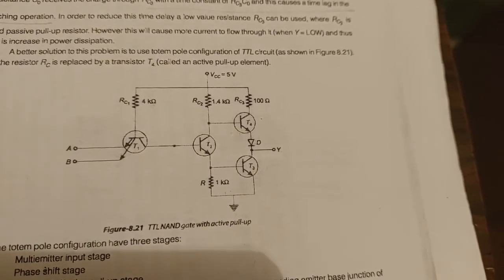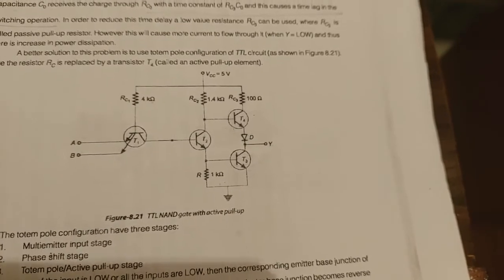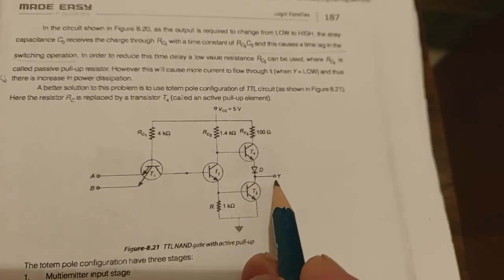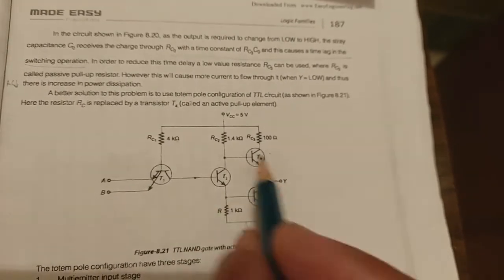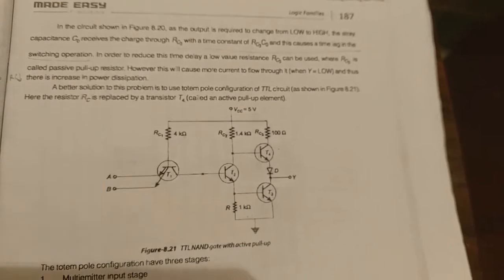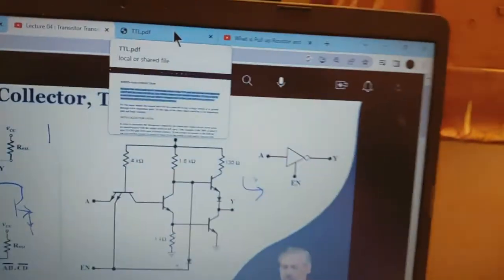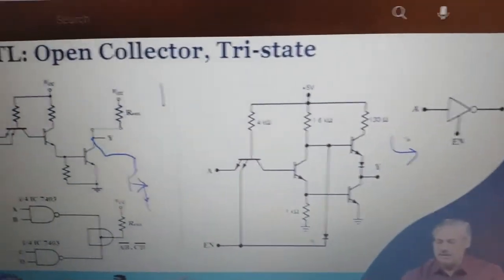This is a NAND gate circuit and this cannot be connected wired together. The outputs of this and output of another circuit cannot be connected together. It cannot happen in this, but it is allowed in open collector circuit.